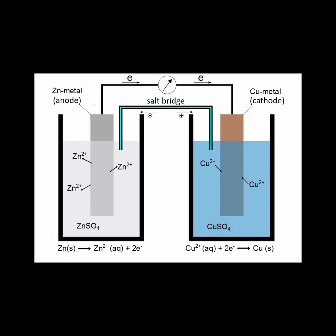The Daniell cell. Here, we physically separate the redox processes into two parts: the reduction part and the oxidation part.